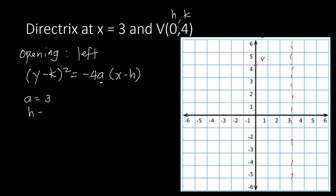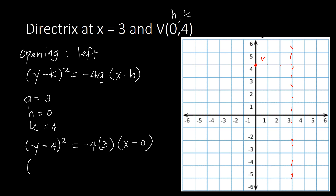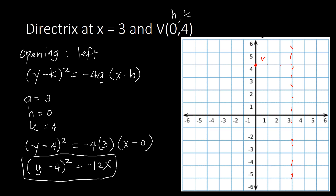From the vertex, h = 0 and k = 4. Plugging in: (y − 4)² = −4 · 3 · (x − 0), which simplifies to (y − 4)² = −12x. This is our standard equation of the parabola.